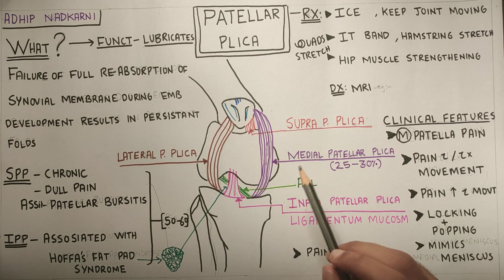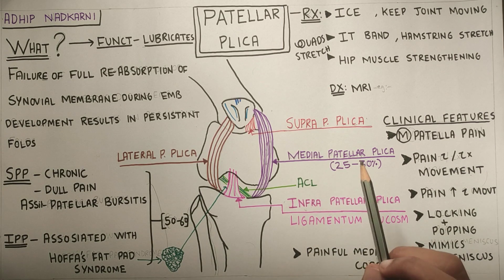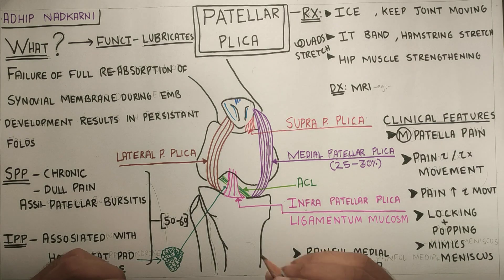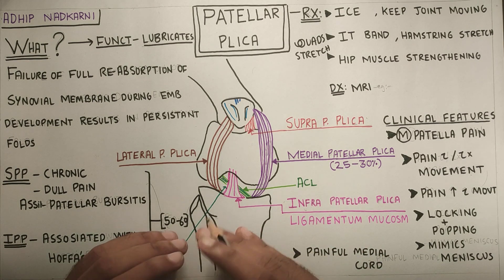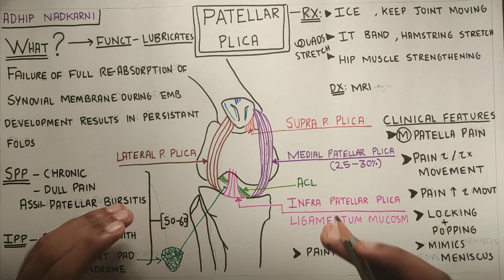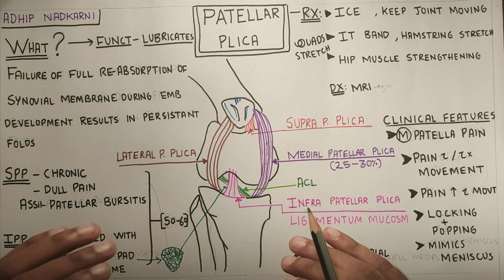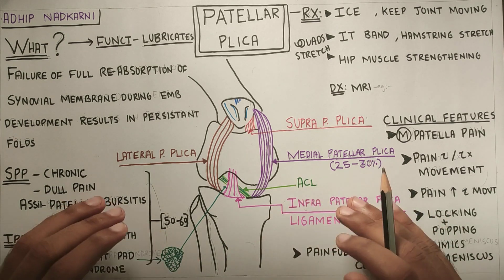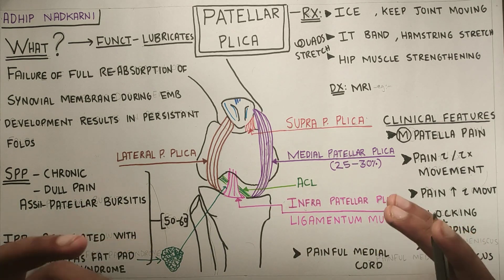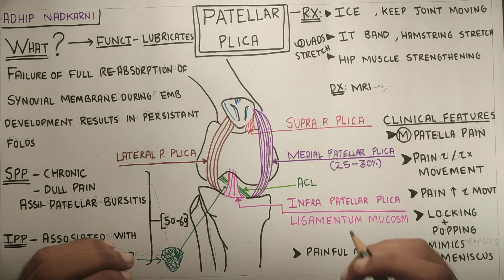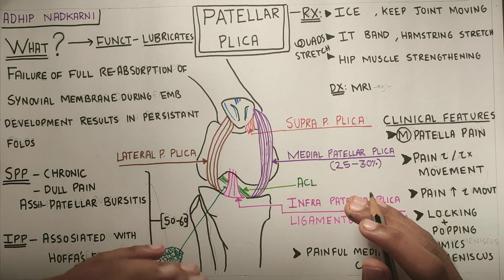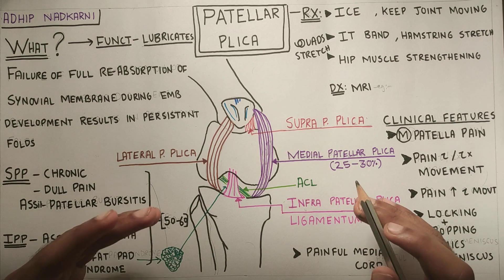Now going to the treatment of patellar plica syndrome. I would like to explain this by giving an example of an irritated girlfriend. Whenever your girlfriend is irritated, the last thing you want to do is ignore her — and the same is the case for patellar plica syndrome. If you keep the knee joint immobile, the knee is just going to get stiffer and stiffer and the condition will worsen.